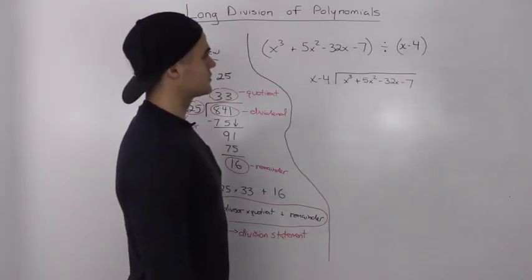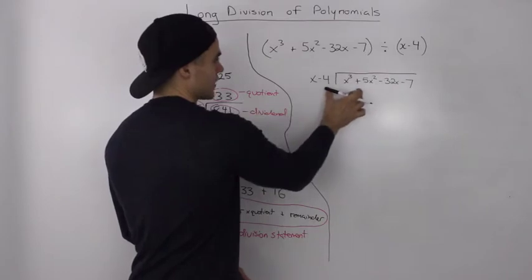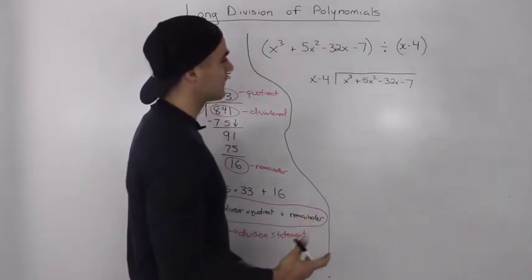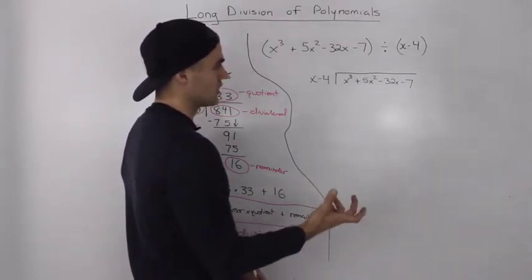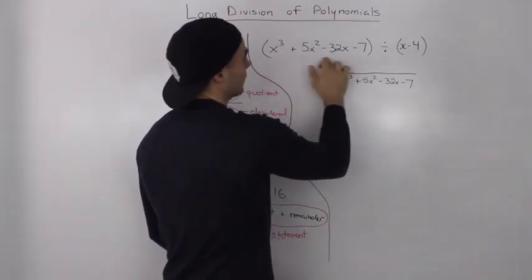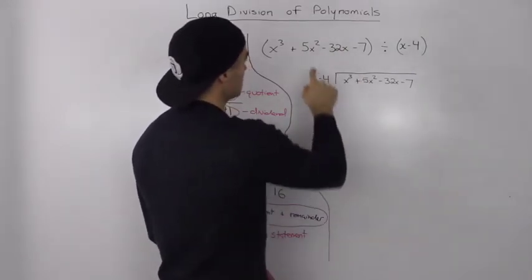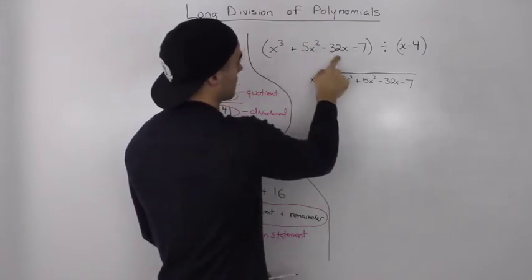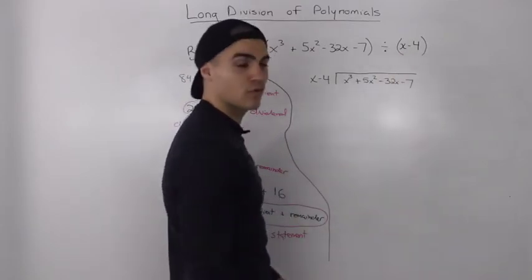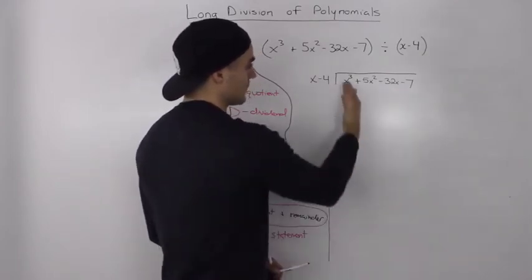Now let's go into doing the long division on the polynomial we have. The first thing you always want to check before dividing polynomials is that they are arranged from highest degree to lowest degree. In this case we were already given that, but sometimes you might get terms out of order, so you have to rearrange before doing the long division.